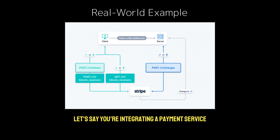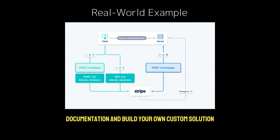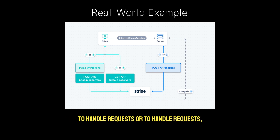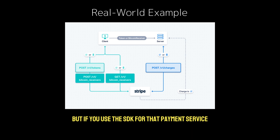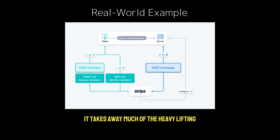Let's say you're integrating a payment service. You can use a payment API to make requests, like charging a customer's card. The API will specify what data you need to send and what the response will look like. However, you could take that API documentation and build your own custom solution for interacting with the service, perhaps writing your own code to handle requests, authentication, and responses. But if you use the SDK for that payment service, the SDK comes with pre-built libraries that help you handle those requests easily, manage authentication, and even manage errors. It takes away much of the heavy lifting and speeds up your development time.